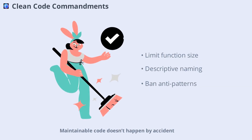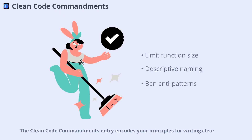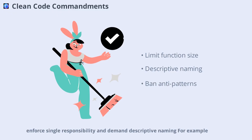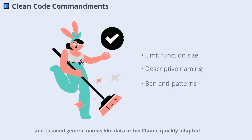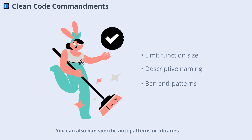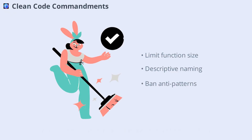Maintainable code doesn't happen by accident. The Clean Code Commandments entry encodes your principles for writing clear, modular, and human-friendly code. Set limits on function size, enforce single responsibility, and demand descriptive naming. For example, I required functions to be under 50 lines and to avoid generic names like 'data' or 'foo.' Claude quickly adapted, refactoring large routines and spotting duplicate logic. You can also ban specific anti-patterns or libraries.